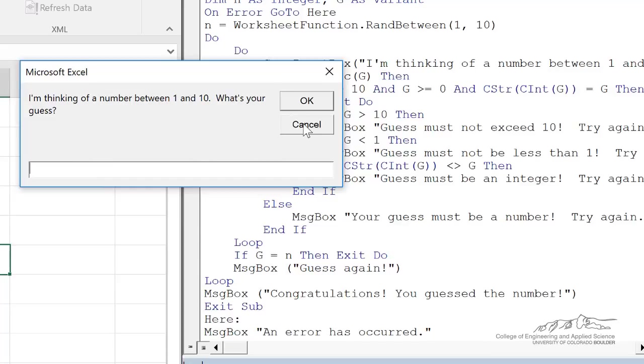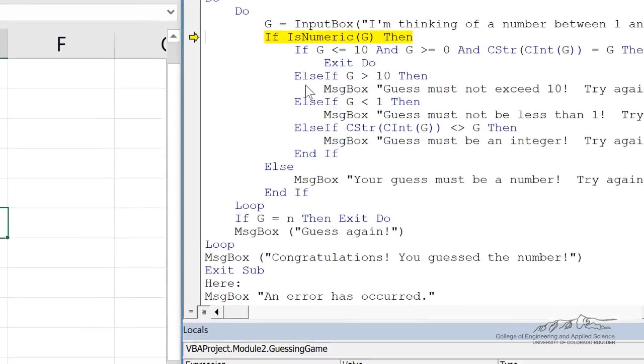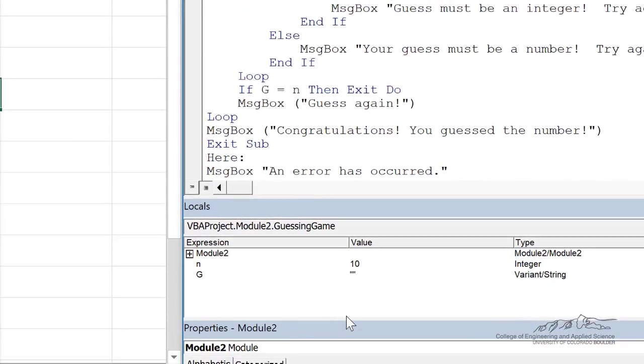For example, if I press cancel, we look down here in the locals window. It obtains G as an empty string. So there's nothing in it. So let's deal with this. So now we're going to sort of add in one more thing.